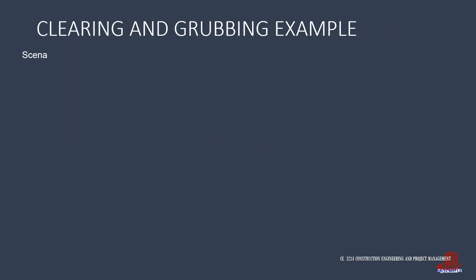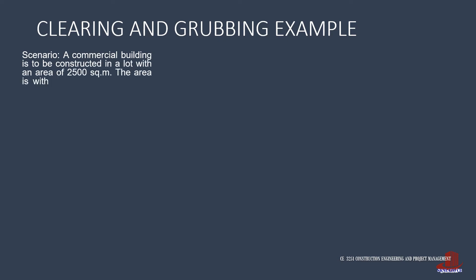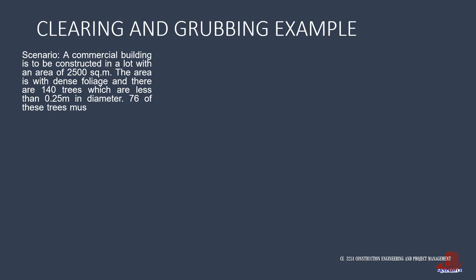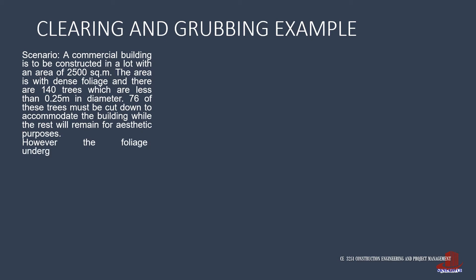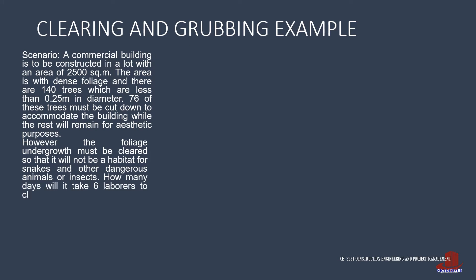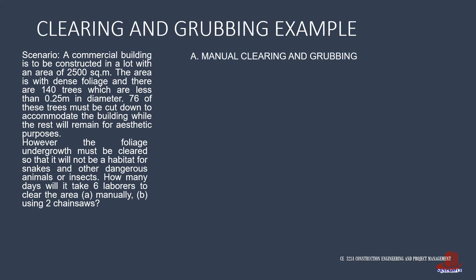Let's focus on the first example, where the duration of clearing and grubbing is to be determined when six laborers are required to work manually, or if two chainsaws are rented. In the scenario, the area of 2,500 square meters is of dense foliage, which even includes 140 trees, but only 76 of them should be cut down.